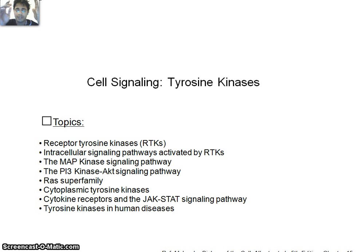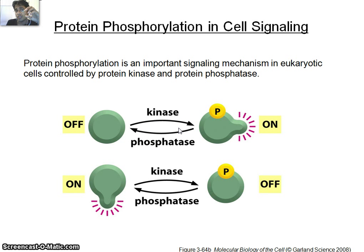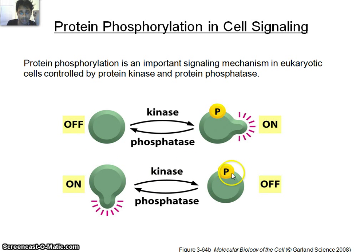First, I want to show how phosphorylation can activate or deactivate a protein or enzyme. Kinases generally add a phosphate group to a protein or enzyme, and phosphatases remove it. Upon addition of phosphate, the protein or enzyme becomes activated; phosphatase removes the phosphate group and it becomes inactivated. In some cases, a protein becomes inactivated when a phosphate group is added, and activated when it is removed by phosphatase.